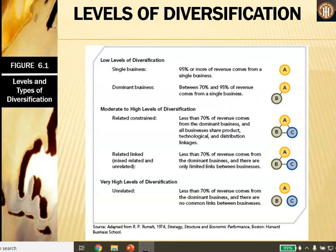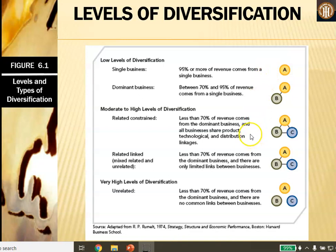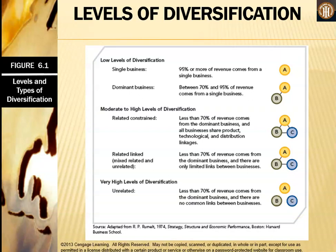Now we will look at the levels of diversification. There are low levels, moderate to high levels, and very high levels of diversification. For the single business, a dominant business operates by itself and makes most of its money from one business. For related constrained, companies A, B, and C are all connected. For related linked, A and B are connected and B and C are connected, but A and C are not. For very high levels of diversification, three completely different companies do not share anything at all.